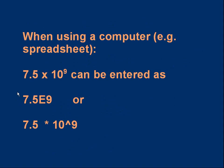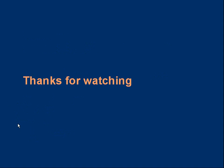Finally, if you're using a computer or spreadsheet to enter standard form numbers, 7.5×10⁹ can be entered as '7.5E9' or as '7.5*10^9' — the power symbol is typically a caret (^), usually Shift+6. Either form will correctly enter the standard form number. That concludes the lesson — I hope you know more about standard form and that it's useful for your calculations.